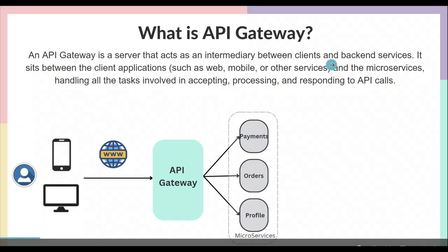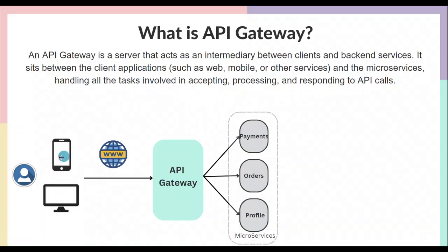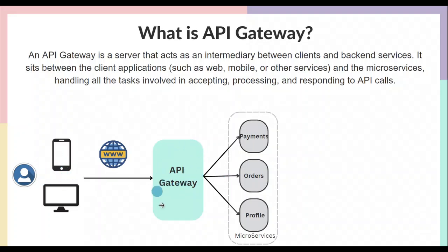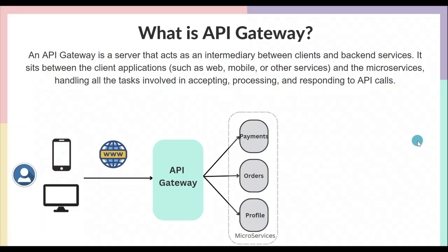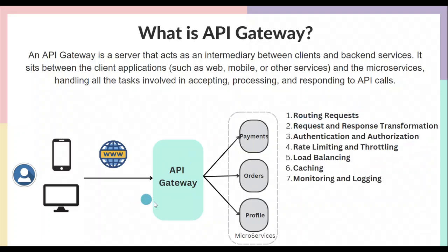API Gateway sits between client applications — like your mobile app, web app, or any other application — and the microservices on the back-end. It handles all the tasks involved in accepting, processing, and responding to API calls. When the user makes an API call, it accepts that request, forwards it to the appropriate backend service, accepts the response from that service, and forwards the response back to the client.